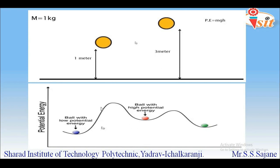Similarly, with three balls of different colours — blue, red, and green — placed at different heights relative to a reference datum line, the red ball is at the greatest height. Therefore the red ball will have the highest potential energy compared to the other balls. This demonstrates the concept that potential energy is dependent on the height at which the object is placed above a reference datum.